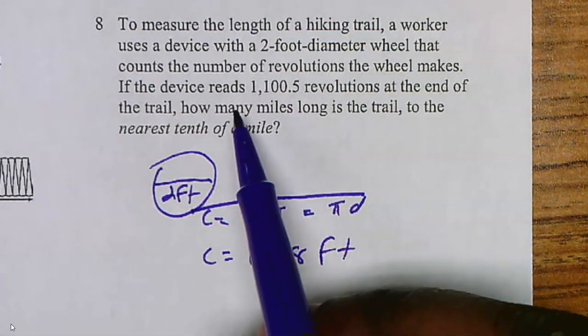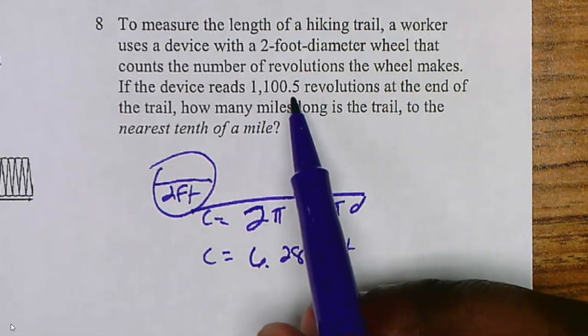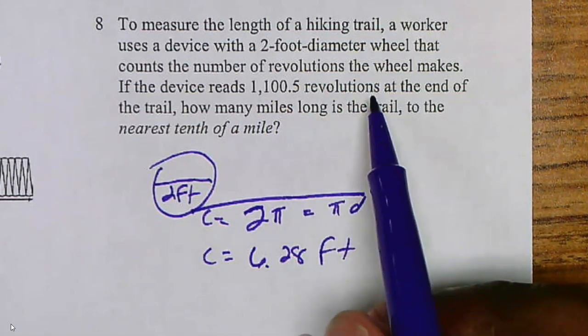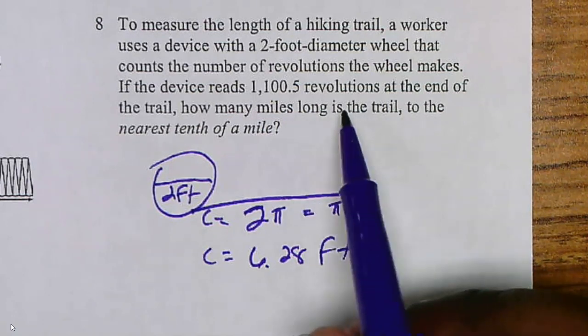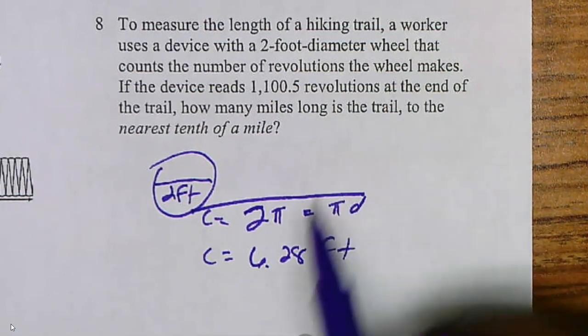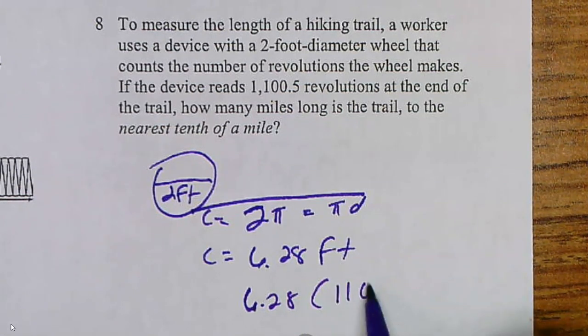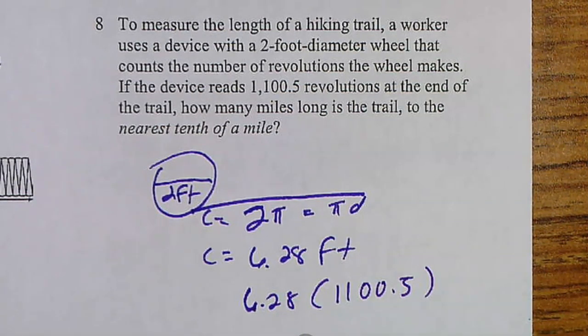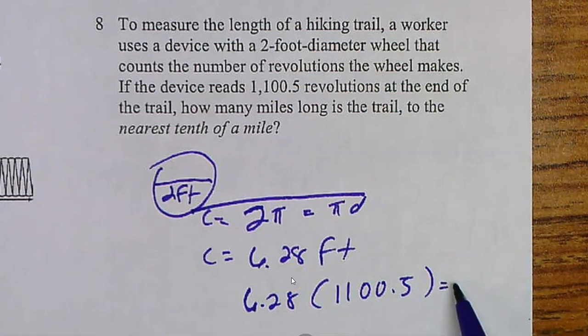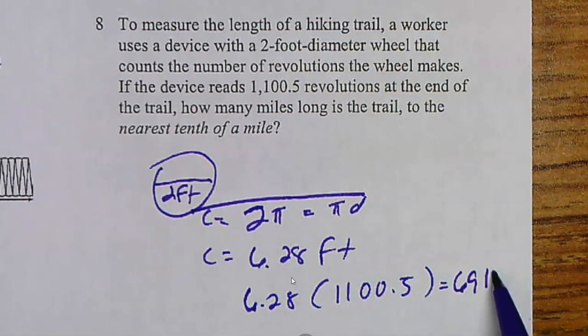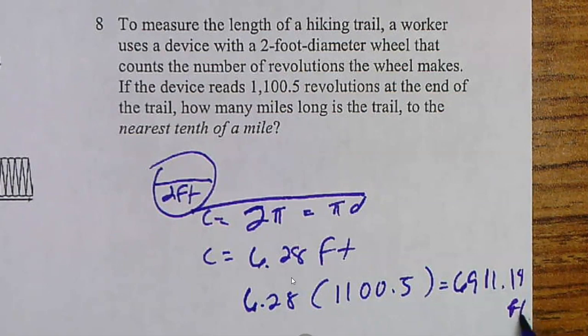And it says that if the device reads 1,100.5 turns, or rotations, or revolutions, at the end of the trail, how many miles is it going? So I'm going to take that 6.28 and multiply that by 1,100.5. And that gives you 6911.14 feet.